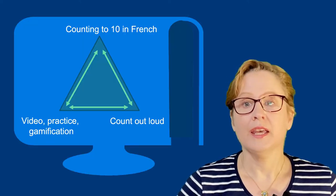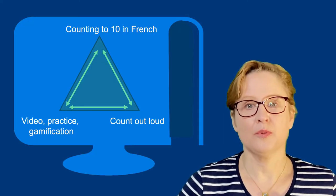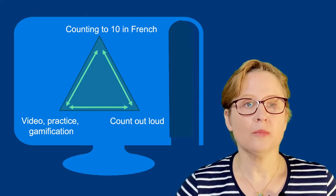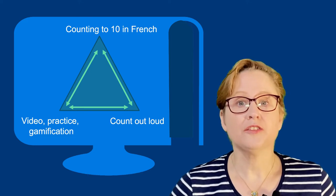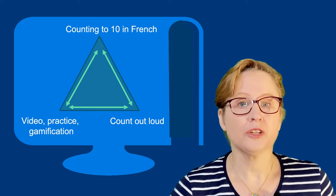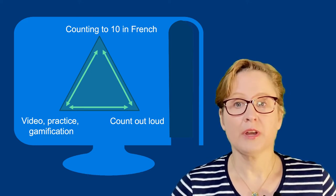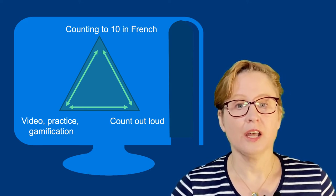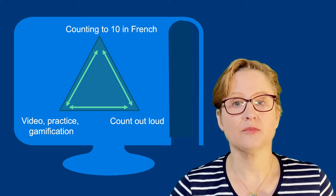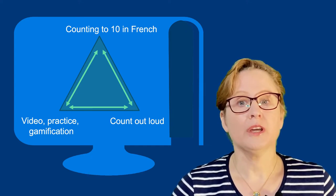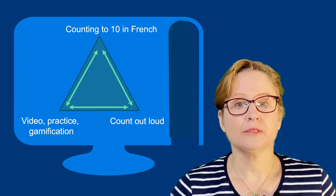Each student that does so successfully gets a macaron. In this example, the learning outcome — counting to 10 in French — is achieved by first learning the numbers, practicing counting in class, and is verbally assessed at the end of class. All three are in alignment.